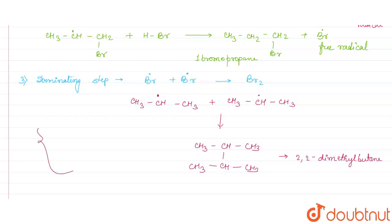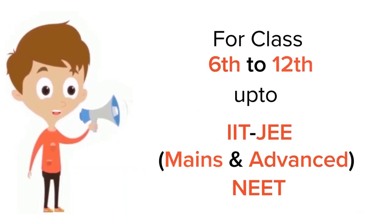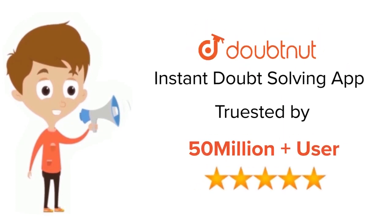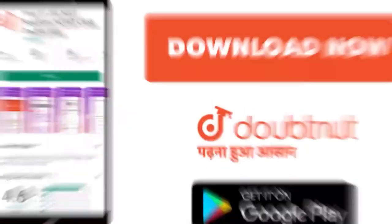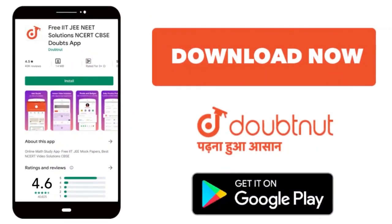So this is the complete answer for our question. Hope this answer helps you. Thank you. For class 6 to 12, IIT JEE and NEET level, trusted by more than 5 crore students — download the DoubtNet app today.